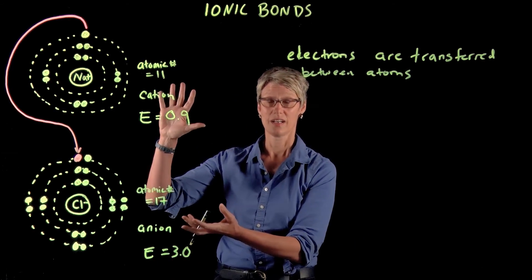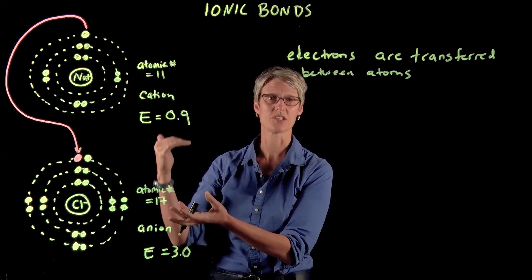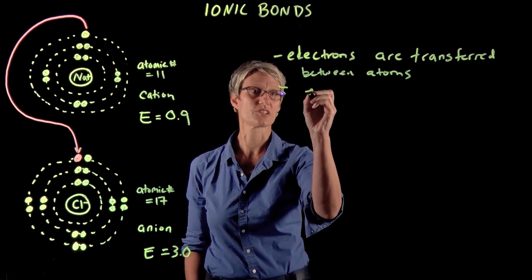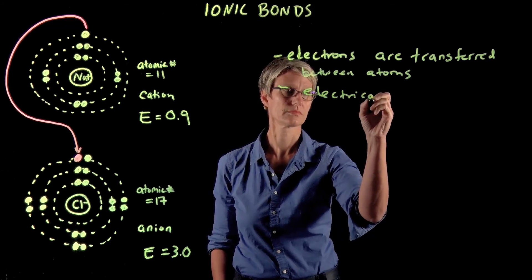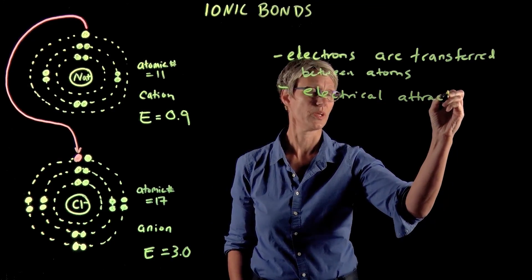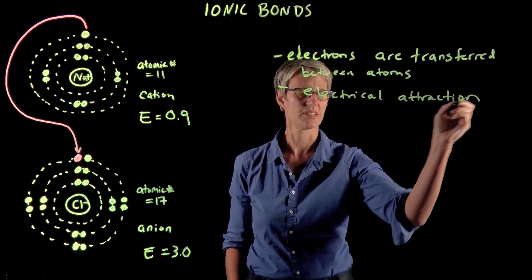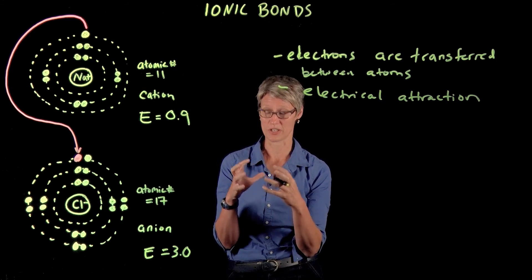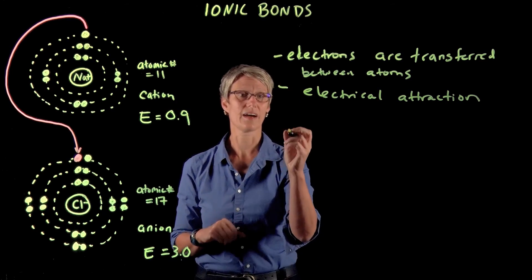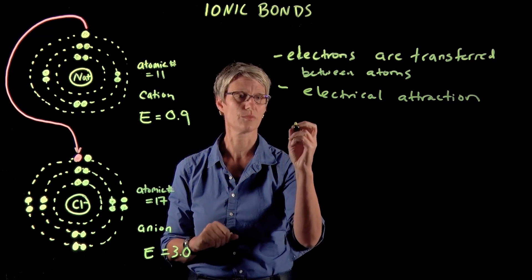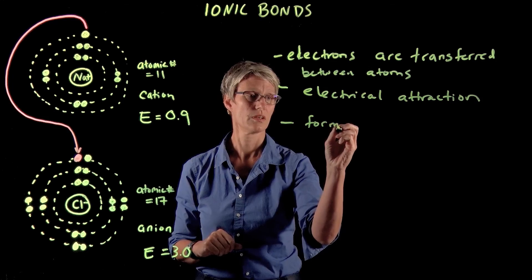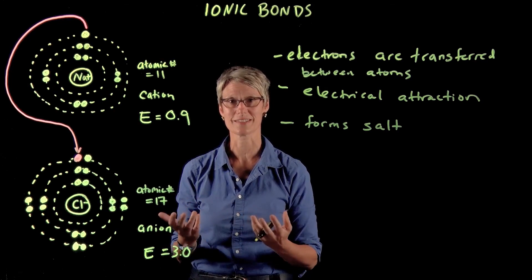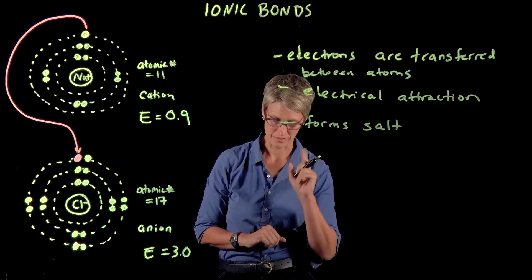Now that these are charged ions, they have a very strong attraction to each other, and so the ionic bond occurs. An ionic bond is actually an electrical attraction between two oppositely charged ions, and that attraction is really quite strong. When they are associated with each other it forms something called a salt. Of course you're well familiar with sodium chloride — that's table salt. It's delicious; we shake it on our food, although not too much.